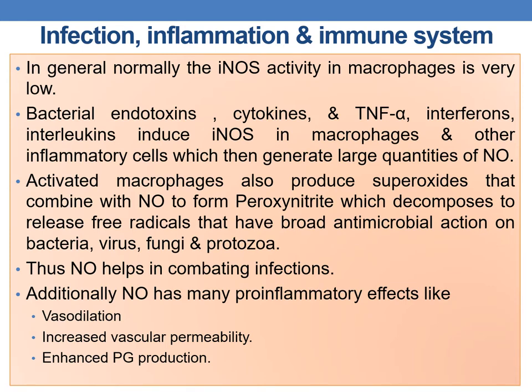Regarding infection, inflammation, and the immune system: normally inducible NOS activity in macrophages is very low. Bacterial endotoxins, cytokines, tumor necrosis factor-alpha, interferons, and interleukins induce iNOS in macrophages and other inflammatory cells, generating large quantities of nitric oxide. Activated macrophages also produce superoxides that combine with nitric oxide to form peroxynitrite, which decomposes to release free radicals with broad antimicrobial action against bacteria, viruses, fungi, and protozoa. Thus NO helps combat infection.